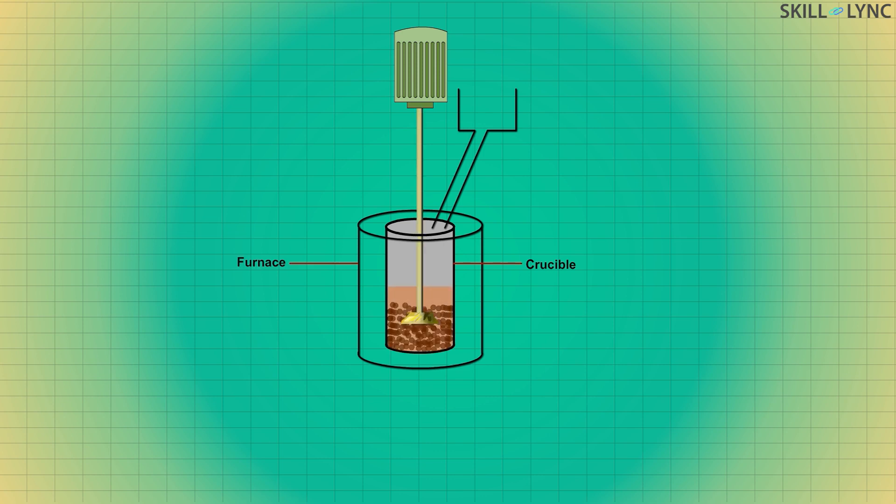During the same time, reinforcing materials like carbon fiber and silicon carbide are preheated in another furnace. This preheating is necessary in order to remove impurities, moisture, etc. After the matrix material is melted completely, the stirring process is commenced.